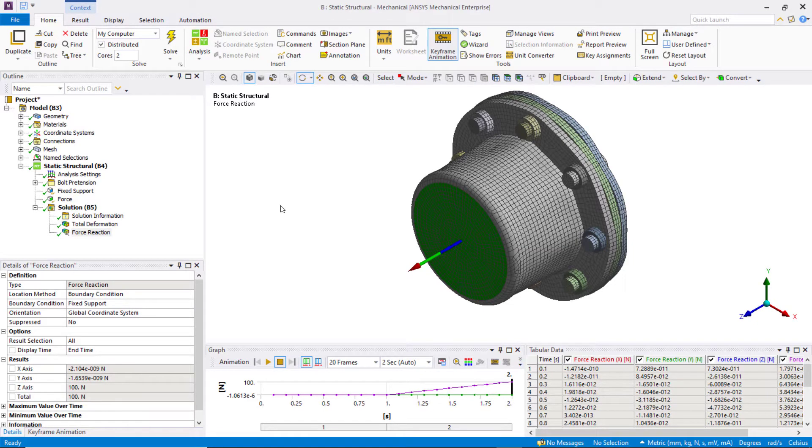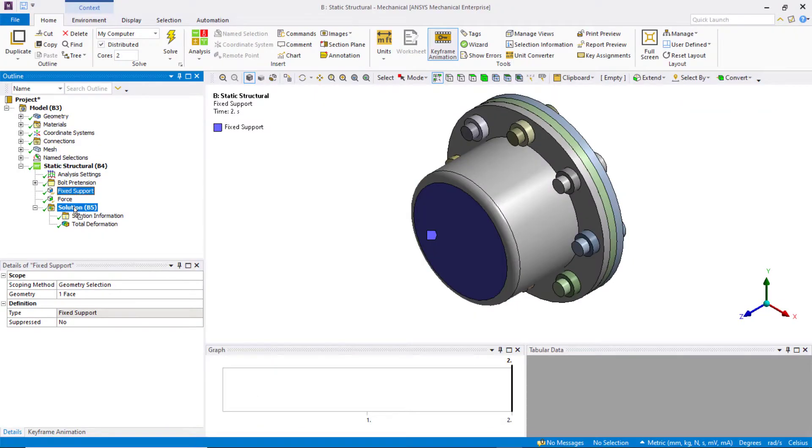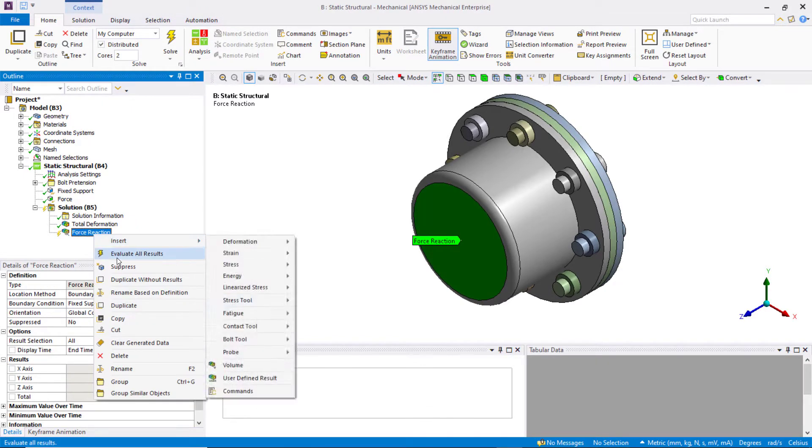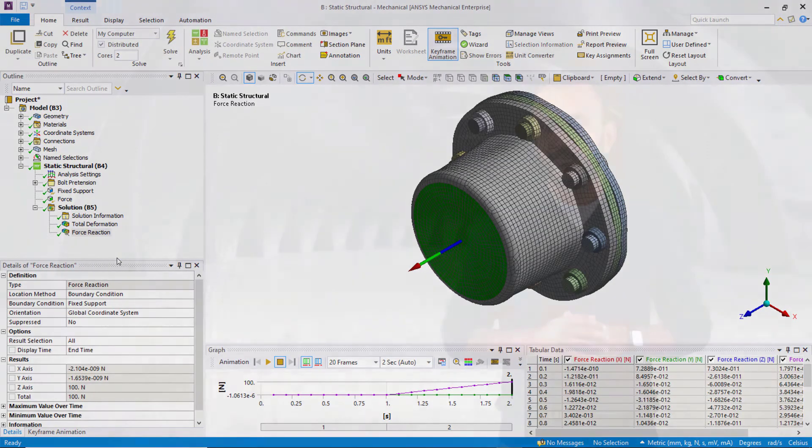One can create a force reaction probe by dragging and dropping the object under solution. Pay attention to the scoped objects though. If the contact or boundary condition is scoped to a geometry which has a part of it such as an edge or a vertex shared with another boundary condition or load, then the resulted reaction force may be a combination of them.